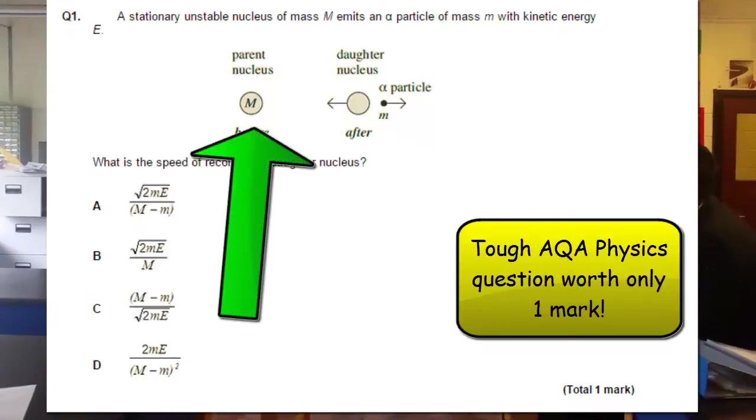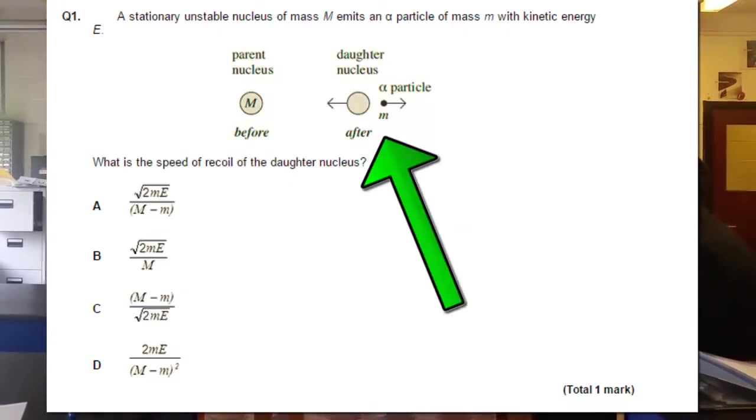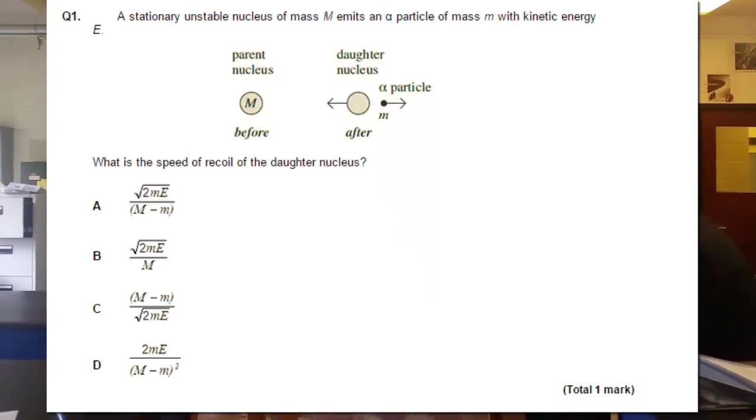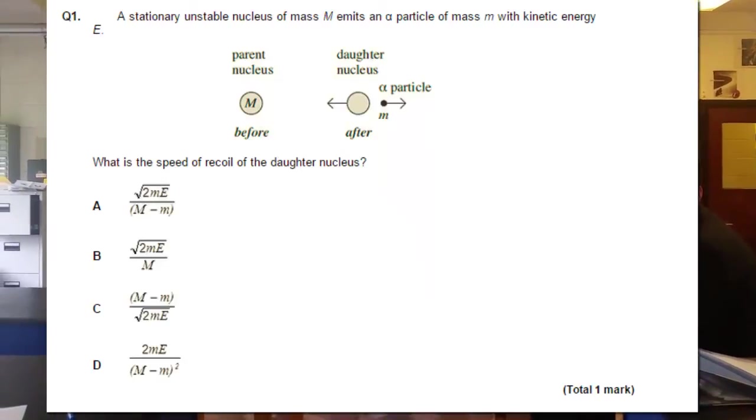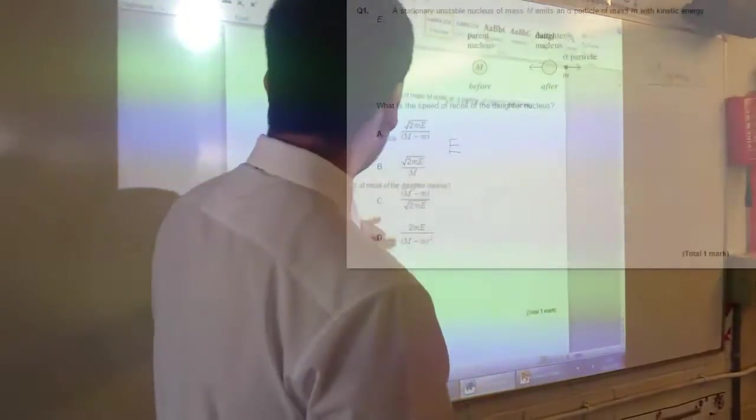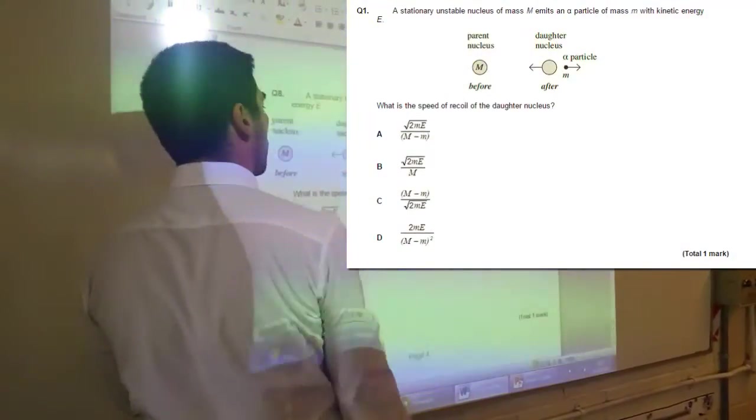You've got this object, it's split in two, and you're told that it's shot this way, in this direction, giving the kinetic energy of that one. So you're asked to find the recoil velocity of the daughter nucleus, which is this one here.